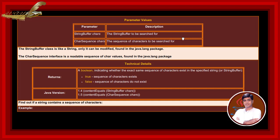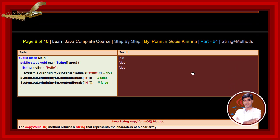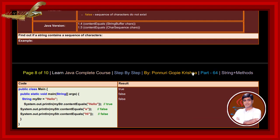The StringBuffer class is like String, only it can be modified, found in the java.lang package. The CharSequence interface is a readable sequence of character values found in the java.lang package. Technical details: returns a boolean indicating whether the exact same sequence of characters exists in a specified string or string buffer — true if it exists, false if not. Java version 1.4 introduced contentEquals(StringBuffer); version 1.5 added contentEquals(CharSequence). If we write and execute this code, the output result returns true, false, false.